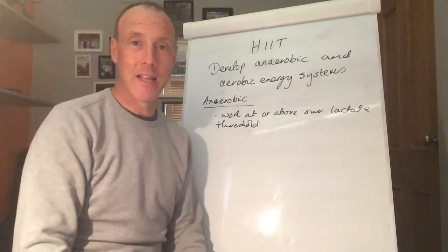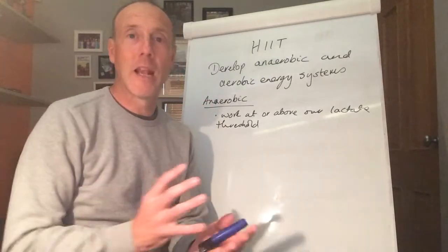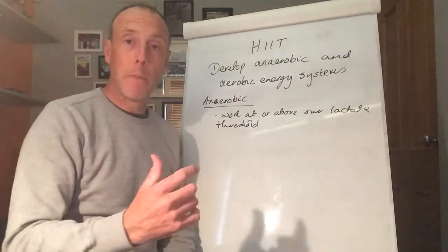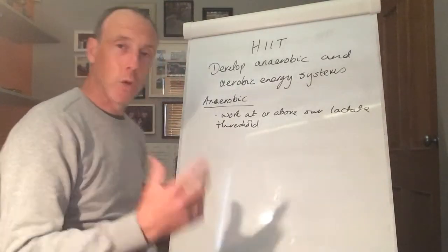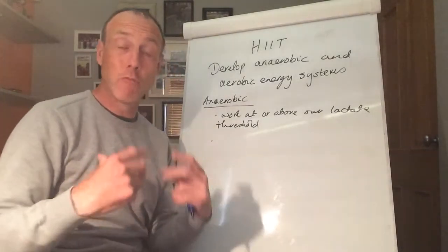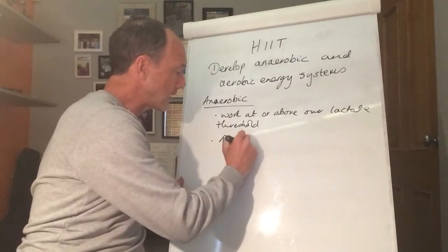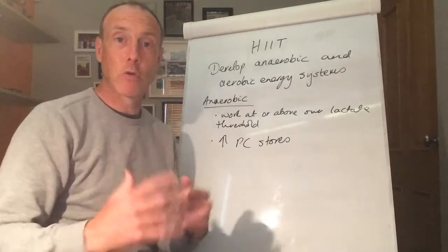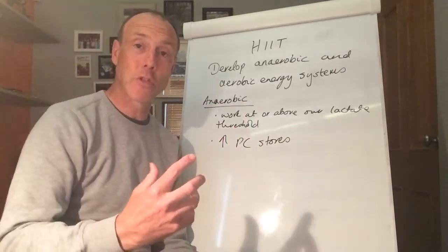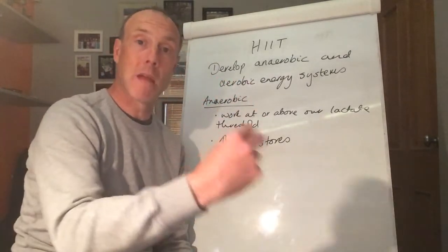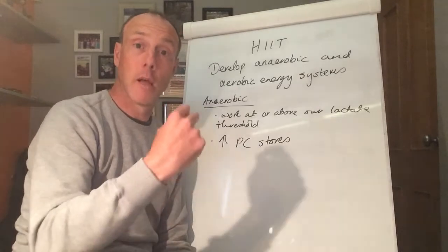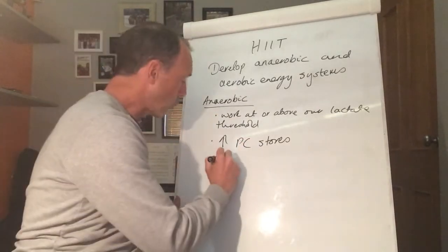Working above the lactate threshold means we are really tempting the accumulation of lactic acid to a point where it's being produced way above that which can be removed — because that's how we seek to adapt, making ourselves uncomfortable. Because we are working at maximal intensity, we need real fast immediate release of energy, so we increase our PC stores within the cells. Those increased PC stores allow us to begin to maintain maximal activity for longer, and we also increase the efficiency of the lactic acid system.